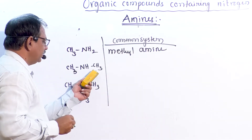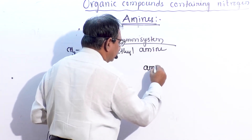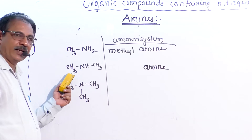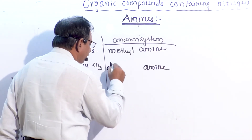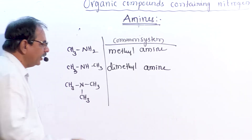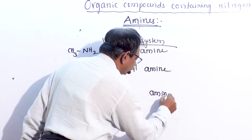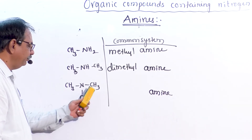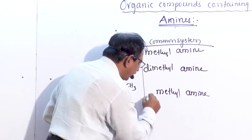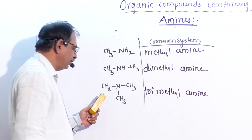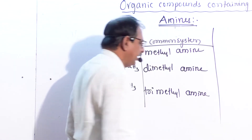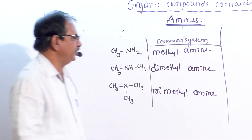In the common system, when two identical alkyl groups are present, we use the prefix 'di' — giving dimethylamine. When three identical methyl groups are present, the prefix 'tri' is used, giving trimethylamine. These compounds are also named under the IUPAC system.